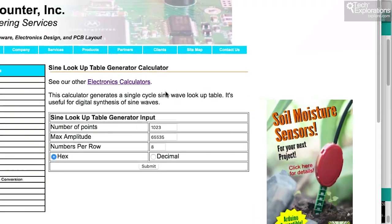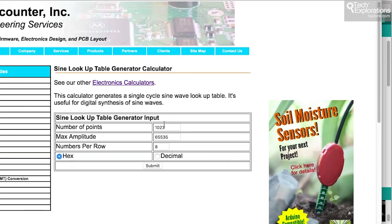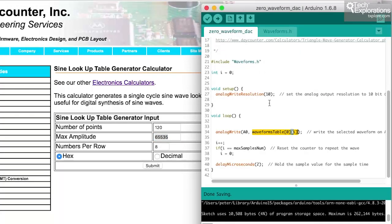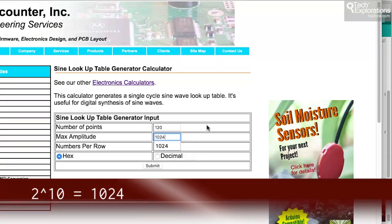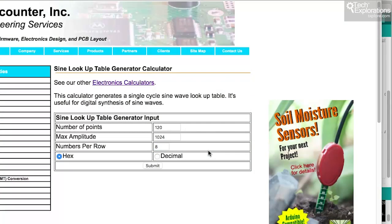The way that this works is this. Now, here's an example calculator, very useful. I can tell it that I'd like to have 120 points in a period, and the maximum amplitude depends on your digital-to-analog converter. In my case, the digital-to-analog converter is configured to 10 bits of resolution, so at 10 bits of resolution, the maximum amplitude is 1024, and you can choose whatever you like here for numbers per row 8. I'll select hexadecimal for the output values. Submit it.